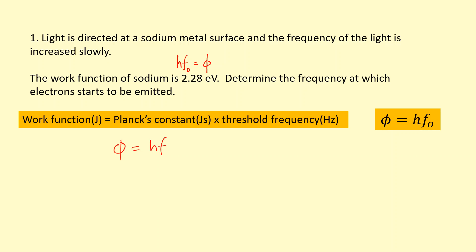I'm going to turn the work function into joules: 2.28 times 1.6 times 10 to the power of minus 19. Then the Planck's constant here, which is 6.63 times 10 to the power of minus 34, times the threshold frequency. Rearranging this and finding f naught, we get 5.50 times 10 to the power of 14 hertz. That's the minimum frequency the light needs to have.